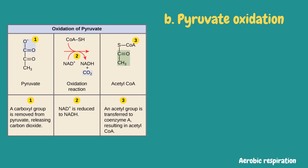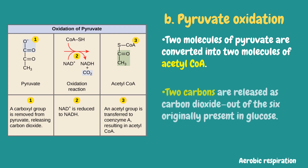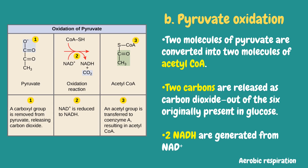After producing pyruvate in glycolysis, two molecules of pyruvate will be converted into two molecules of acetyl-CoA. Two carbons are released as carbon dioxide out of the six originally present in glucose, wherein two NADH are generated. Acetyl-CoA serves as fuel for the citric acid cycle in the next stage of cellular respiration. The addition of CoA helps activate the acetyl group, preparing it to undergo the necessary reactions to enter the citric acid cycle.